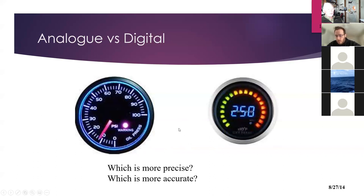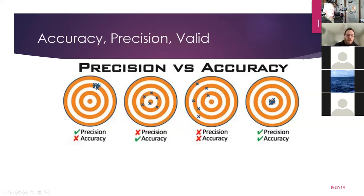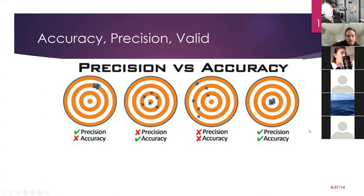A target illustration makes this clear: tight grouping off-center is precise but not accurate; grouping spread around the bull is accurate but not precise; all over the map is neither; and tight on the center is both accurate and precise. These concepts apply to everything engineers do.